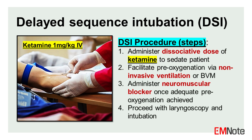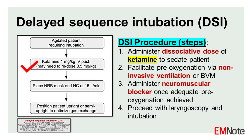Procedure. The DSI protocol involves administering a dissociative dose of ketamine to sedate the agitated patient and facilitate pre-oxygenation, either via non-invasive ventilation or a bag valve mask device. Once adequate pre-oxygenation has been achieved, as evidenced by an oxygen saturation above 95%, standard neuromuscular blockade is administered to facilitate laryngoscopy and endotracheal intubation.